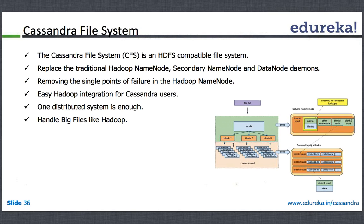It removes many pain points that exist in the Hadoop architecture, namely the single point of failure. Though there are some advanced concepts today in Hadoop to handle the single point of failure, going for a Cassandra file system just gets rid of this. It is horizontally scalable and you don't have the single point of failure.